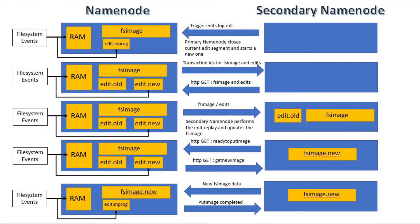The primary name node will in turn send its own HTTP GET message to receive the new updated version of the FS image from the secondary name node. The secondary name node transfers the updated FS image and will receive a confirmation from the primary name node marking successful completion of the checkpoint.